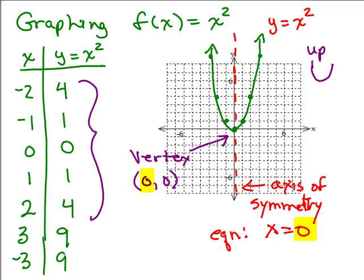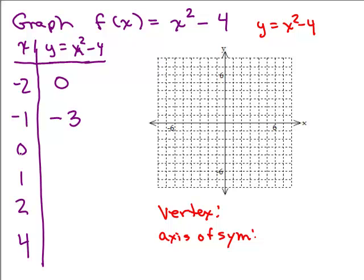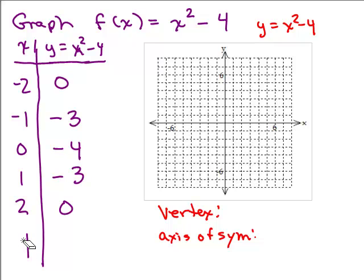All right, we're going to do another quadratic function now. Let's do this one, f(x) equals x squared minus 4. Remember, you could think of that as y equals x squared minus 4. So let's plug in some numbers for x. How about the same 5 we started with in the last one? But this time, instead of just doing x squared, we have to do x squared minus 4. So we're going to do negative 2 squared is 4, and then minus 4 gets you to 0. Negative 1 squared would be 1 minus 4 is negative 3. 0 squared is 0, minus 4 is negative 4. 1 squared minus 4 is negative 3. 2 squared minus 4 is 0.